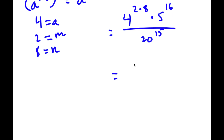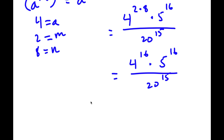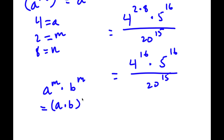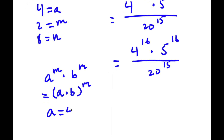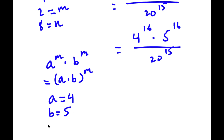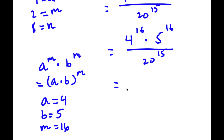Now 2 times 8 is 16, so we have 4 to the power of 16 times 5 to the power of 16 divided by 20 to the power of 15. Now if I have something in the form a to the power of m times b to the power of m, this is equal to a times b to the power of m. So we are essentially factoring out the exponent. In this case we can think of a as 4, b as 5, and m as 16. So this will equal 4 times 5 to the power of 16 divided by 20 to the power of 15.